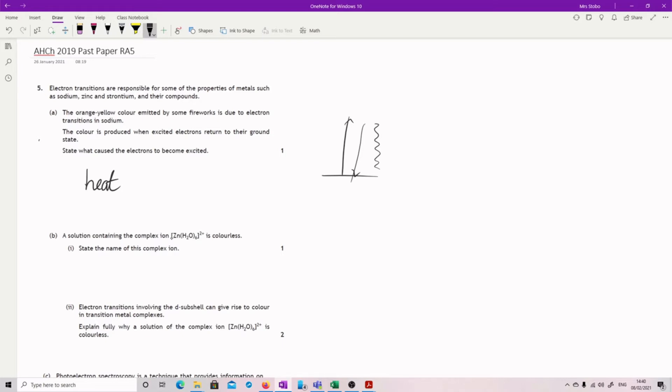A solution containing the complex ion, state the name of this complex ion. So we break it down. We've got six waters, so that's hexaaqua and then it's zinc.